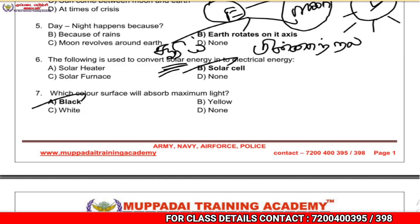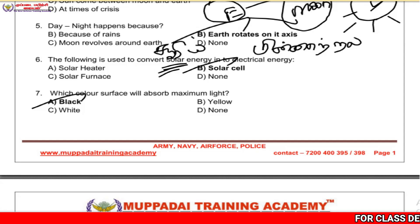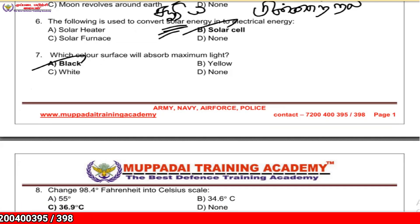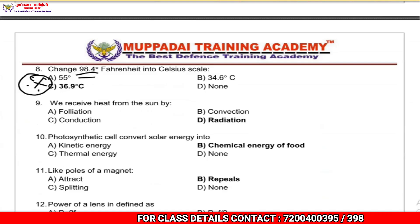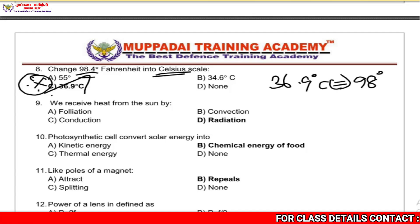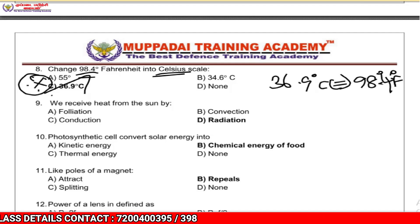Black absorbs more light and more heat. Normal human body temperature is 36 degrees Celsius, which equals 98.6 degrees Fahrenheit.